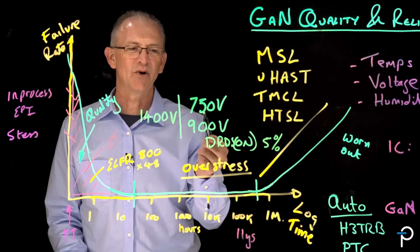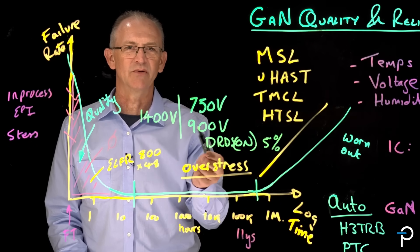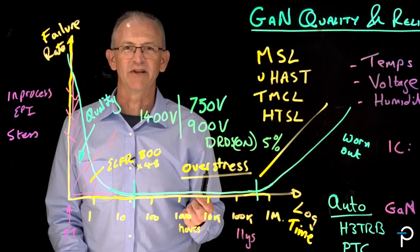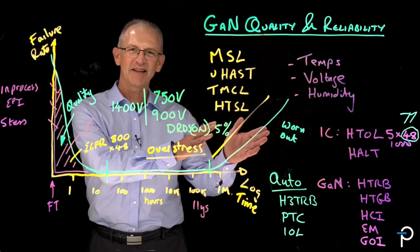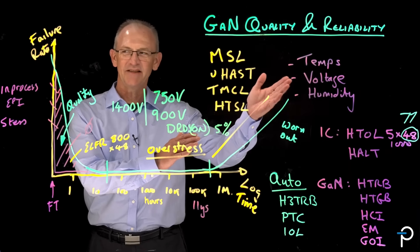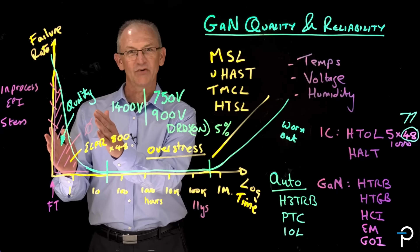So there's a massive margin with respect to the datasheet BV limit. So with this battery of tests for wear-out mechanisms to ensure reliability, for initial quality.